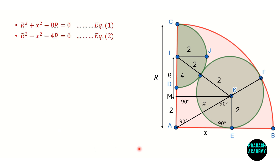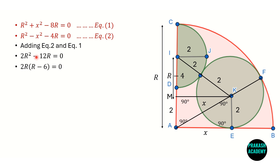Now adding Equation 1 and Equation 2: X² cancels, giving 2R² − 12R = 0. Factoring: 2R(R − 6) = 0. Since radius cannot be zero, R − 6 = 0, so R equals 6.